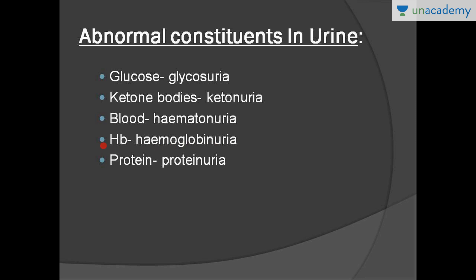If hemoglobin is present, it's called hemoglobinuria. If proteins are present, it's called proteinuria. Proteinuria is very common in nephrotic syndrome, a kidney pathology where massive proteinuria is present. Proteinuria can also be present in physiological states like fever, pregnancy, and in case of burns.